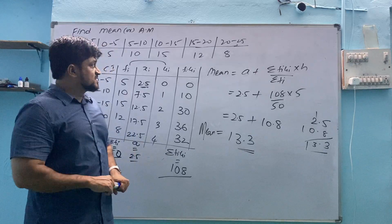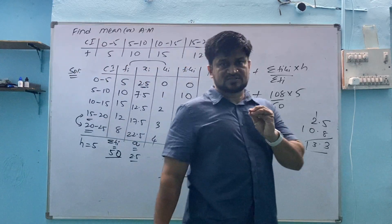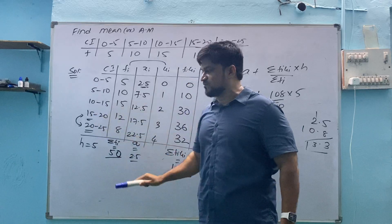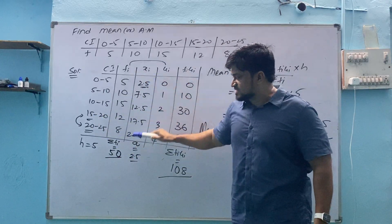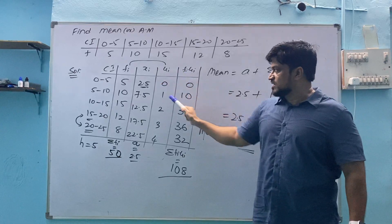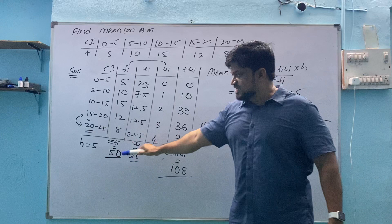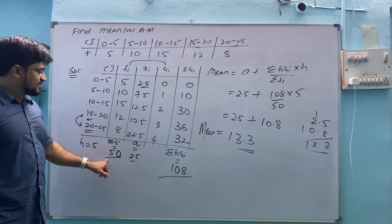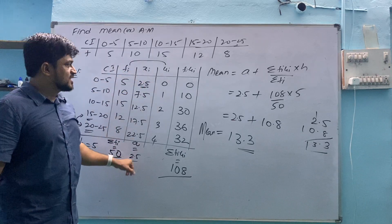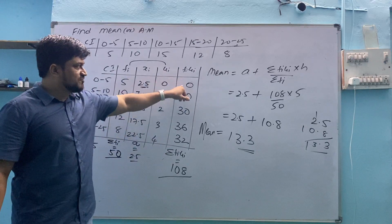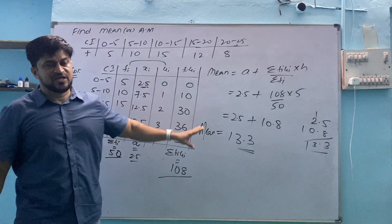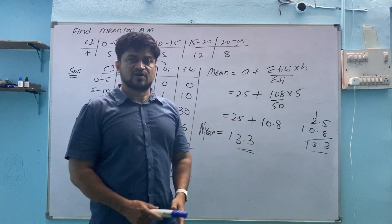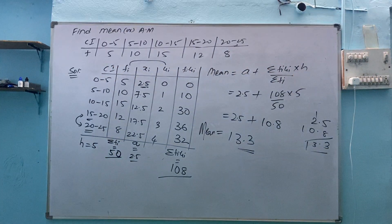To find mean from continuous series, what we have done: we have 5 columns CI, Fi, Xi, Ui, Fi into Ui. Then we have H. How to find H? Subtracting these two will get the value of H. Sigma Fi, first value of Xi is A. Multiply Fi and Ui, these two columns, whatever values you will get, find summation. These four values are important: H we need, from where we are getting H is important, Xi, sigma Fi, Xi first value is always A then we have 0, 1, 2, 3, 4. Then Fi into Ui sum. These four values we are substituting in formula. Once we have formula you can use calculator to simplify this one. At the end you will get the value of mean. Thank you.